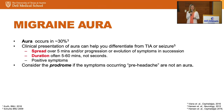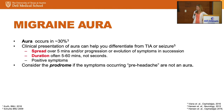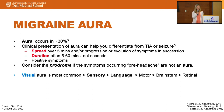Aura occurs in about 30% of patients. To have aura, you need a symptom — typically visual — that starts and spreads over at least five minutes. For example, a patient notices a dot in their vision, and then it grows and expands. These tend to be positive symptoms rather than negative symptoms — paresthesias, seeing rainbows rather than loss of sensation. Visual aura is the most common, followed by sensory and then language aura.